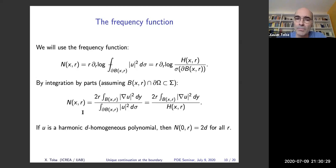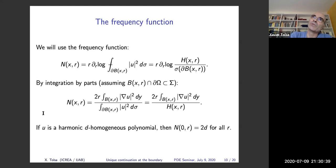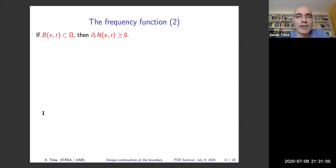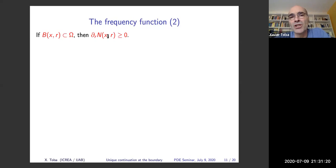In the same way that polynomials of higher degree grow faster and spoil the doubling condition, the frequency function is related to the doubling properties of the function. An important property — discovered by Almgren — is that when the ball B(X, R) is fully contained in omega, the derivative with respect to R of the frequency function is non-negative, so N(X, R) is non-decreasing in R.